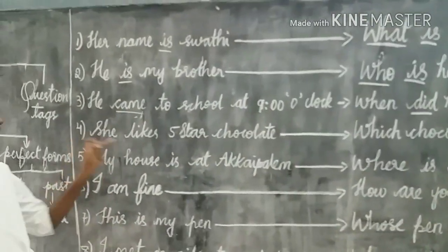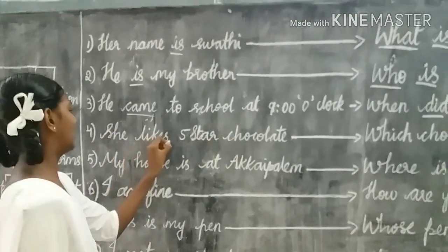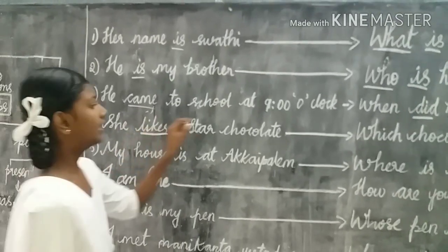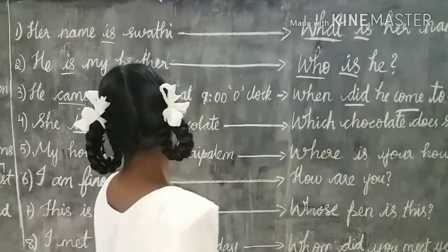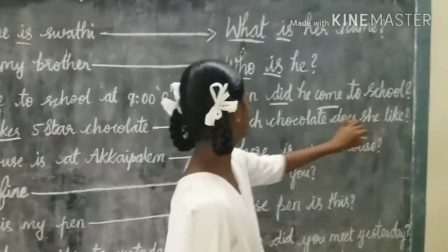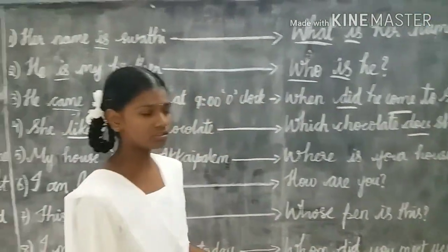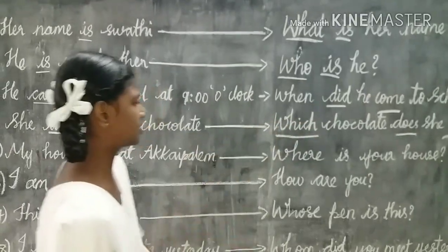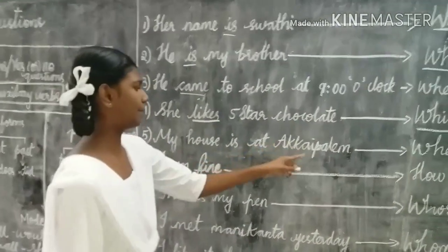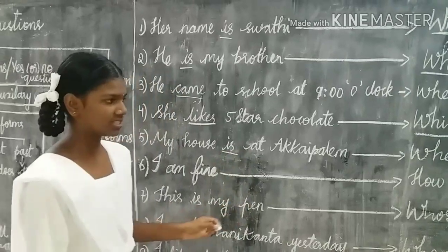The fourth example is: she likes five-star chocolate. Here 'likes' is a verb form where 'likes' indicates 'does' and 'like.' So here we use 'which' as the WH question word.